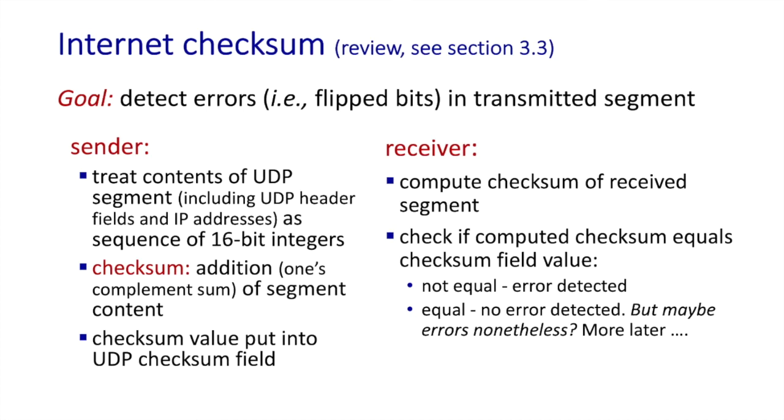We've said and seen that the internet checksum isn't particularly strong, and so it's not used, as far as I know, in any link layer protocols. Instead, a much more powerful technique is used in Ethernet and Wi-Fi. It's known as a cyclic redundancy check, CRC.